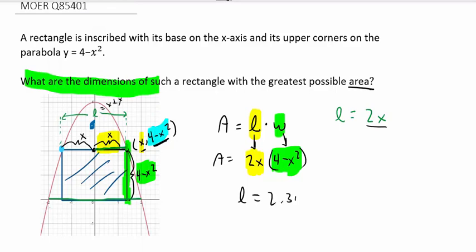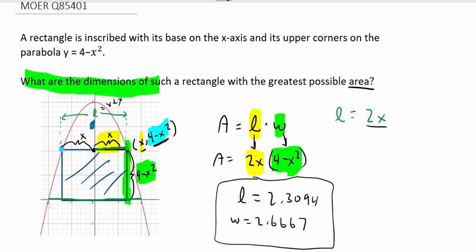So that was length 2.3094, and width approximately 2.6667. And that gives us the answer to 4 decimal places.